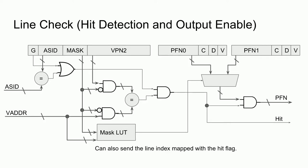The first thing we can look at is the hit detection algorithm for the MIPS TLB. Here is an implementation for a general TLB line with a global flag, ASID, and a variable length page. The ASIDs are compared or the global bit is checked. Virtual addresses and the virtual page number are masked to handle variable page sizes. A masked lookup table determines which bit of the virtual address selects the even or odd page. This hit detection block will be common to all implementations.